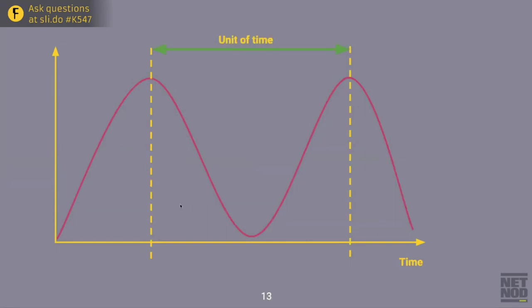If we look at frequency, we can look at the distance in time between two peaks of frequency — the time between two of those peaks we can define as a unit of time. The important thing is that this works really well if the frequency is very stable. We have used units of time like the Earth rotating around its axis, but that is not a very stable frequency. Nowadays we use much better units — the SI definition of a second is based on the number of vibrations of the cesium atom. That is the definition of the unit of time we use today.